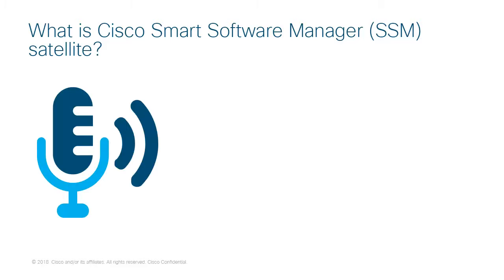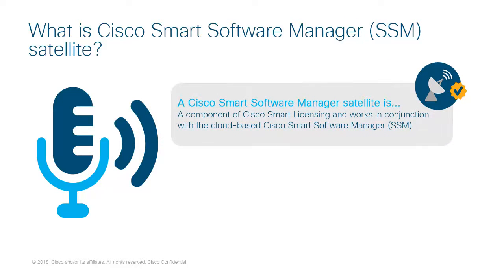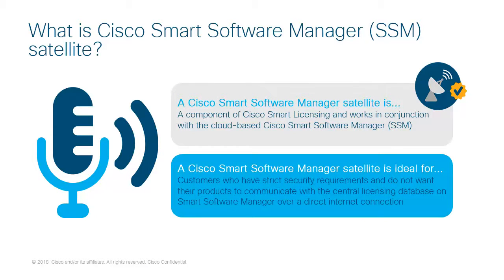Cisco Smart Software Manager Satellite is a component of Cisco Smart Licensing and works in conjunction with the cloud-based Cisco Smart Software Manager to intelligently manage a customer or partner's product licenses, providing near real-time visibility and reporting of the Cisco licenses they purchase and consume. SSM Satellite is an on-prem version of Cisco SSM that can be downloaded free of charge from Cisco.com. It is created for customers who have strict security requirements and do not want their products to communicate with the central licensing database on SSM over a direct internet connection. Most often, this is used by financial institutions, utilities, service providers, and government organizations.